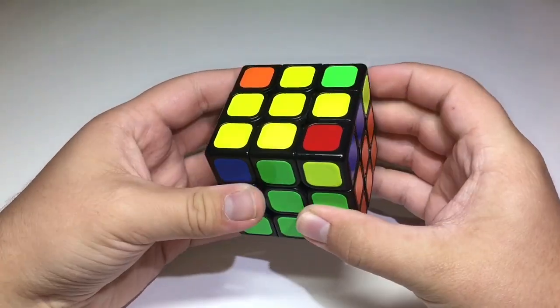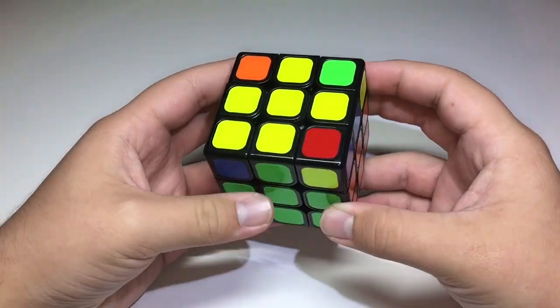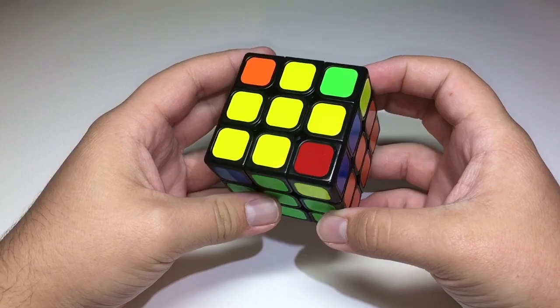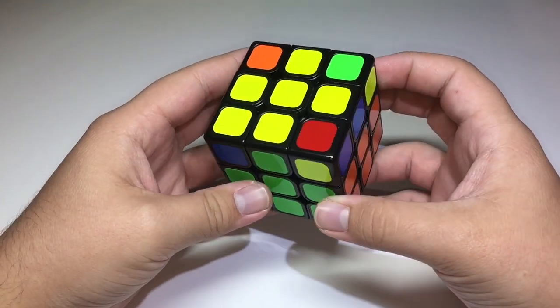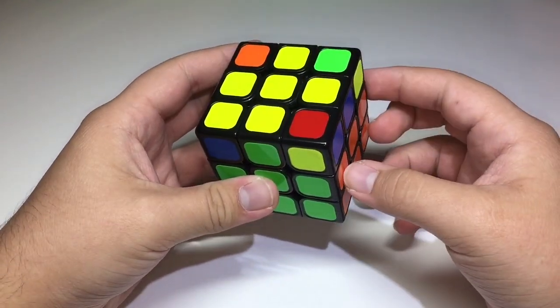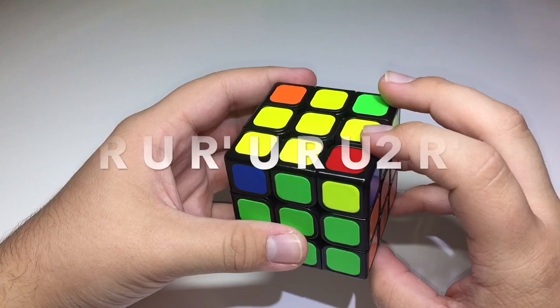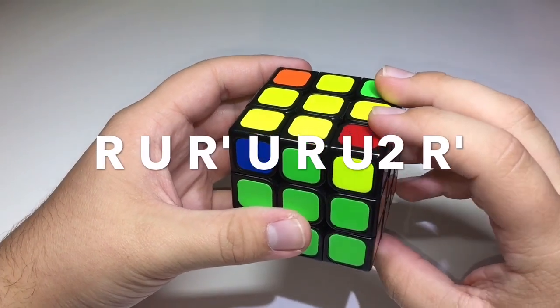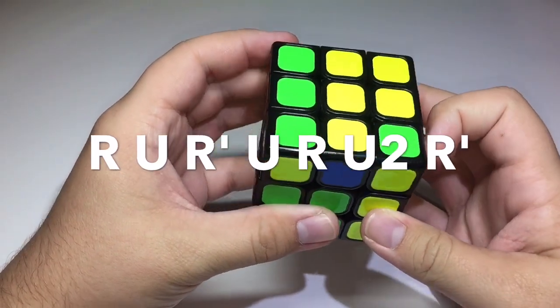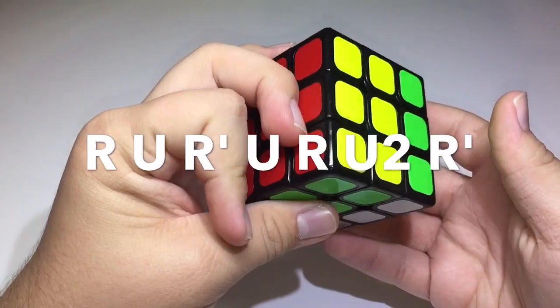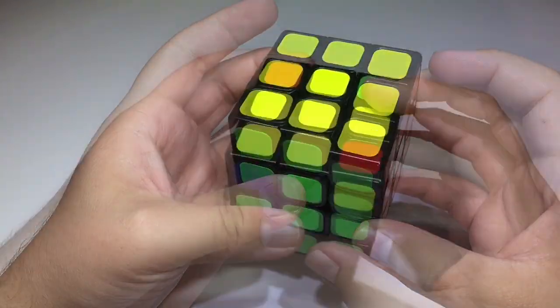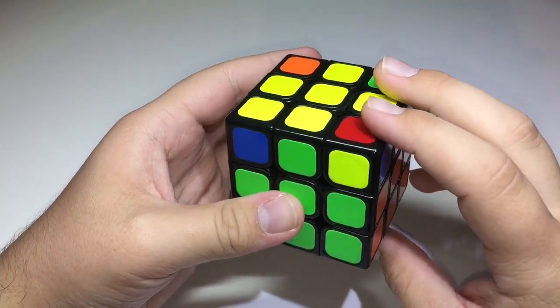So the first case looks like this, and if you know how to solve the Rubik's Cube using the CFOP method, you should already know this case, but if you don't, this is how you do it. Double flick, and this is what it looks like performed fast.